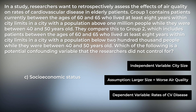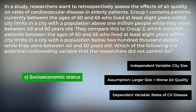Let's look at answer choice C. By process of elimination, we know that this is our correct answer, but let's take a closer look. At any point in the study, did the researchers account for socioeconomic status? The answer is no. In order to account for socioeconomic status, the researchers would have needed to look at household income or another proxy variable. So, answer choice C is our correct answer.